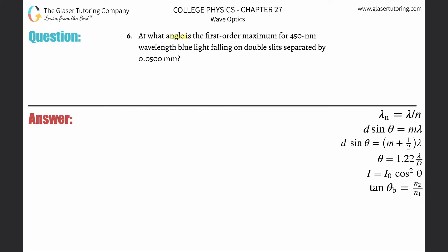Number six: At what angle is the first order maximum for 450 nanometer wavelength blue light falling on double slits separated by 0.05 millimeters? All right, so we need a formula. Now it says first order maximum, so this is for constructive interference.